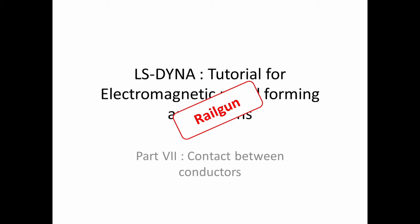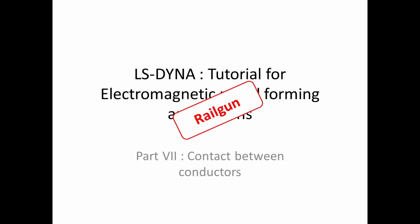If you're unfamiliar with the EM solver and AD currents, I strongly recommend that you check some of the previous parts, unless of course you just want to hear a bit more about railguns. Without further ado, let us begin. First of all, what is a railgun? Well, a railgun is primarily an electric gun which uses AD currents and the Lorentz force in order to accelerate and launch projectiles at several times the speed of sound.